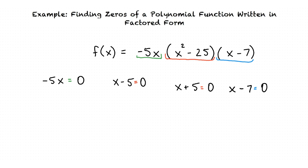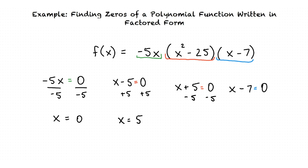Let's begin with negative 5x equals 0. We can divide both sides of the equation by negative 5 and the result is x equals 0. Now let's move on to x minus 5 equals 0. We add 5 to both sides and the result is x equals 5. Moving on to x plus 5 equals 0, we subtract 5 from both sides and the result is x equals negative 5.